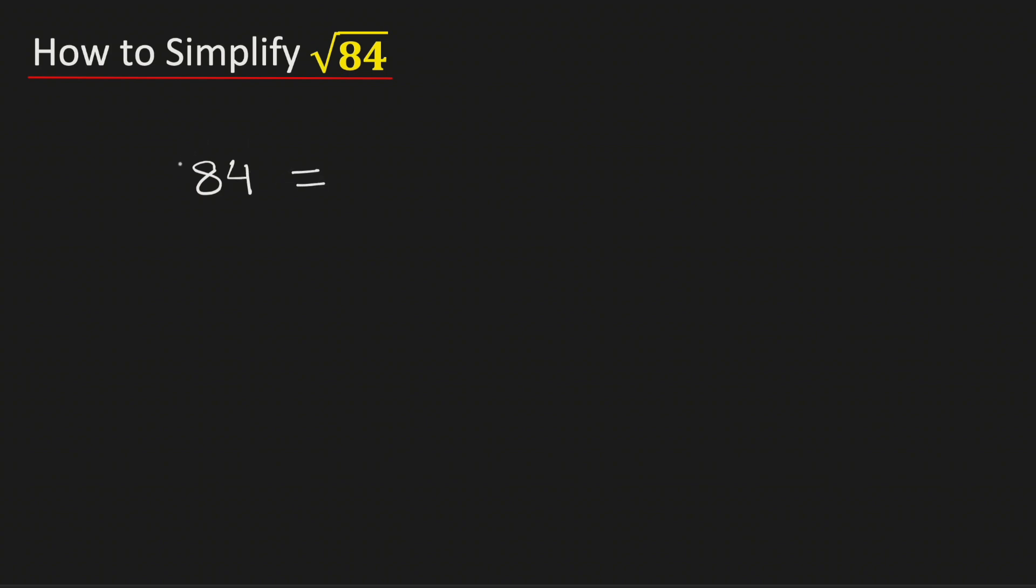To do this, at first we will write down 84 as 4 times 21. We have written this way because 4 is a perfect square which is a square of 2, and 21 is a non-perfect square which is not a square of any number.